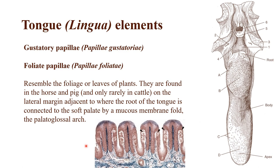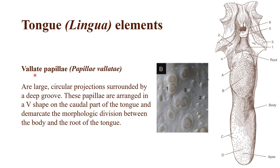This is how they look under a microscope. Here we have the valate papillae, which are larger and represent a circle with a groove. There are usually very few of them on the tongue, so they're not as well recognized, but they still have a purpose and you need to know them.